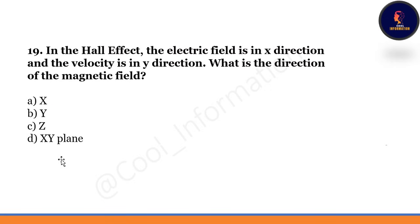In the Hall effect, the electric field is in the x direction and the velocity is in the y direction. What is the direction of the magnetic field? The direction of the magnetic field is in the z direction.